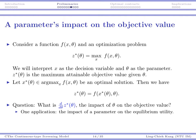The last mathematical tool we need is about how a parameter may affect the objective value. Consider a function f which depends on x and theta, and the optimization problem of trying to maximize f with respect to x. You may interpret x as your decision variable, and theta as something you cannot control — your parameter.